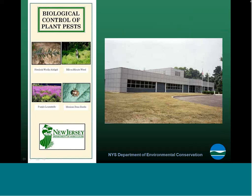Closer to home, New Jersey has a biological control of plant pest building in which they raise numerous biological control agents for distribution in the Northeast. This is run by the New Jersey Department of Agriculture. Four of their projects are the hemlock woolly adelgid, mile-a-minute, purple loosestrife, and the Mexican bean beetle.